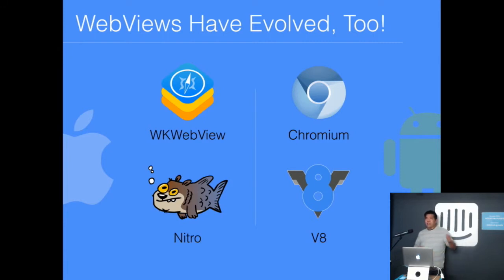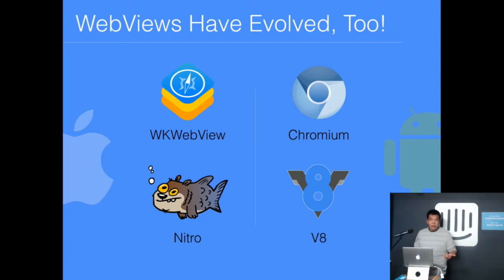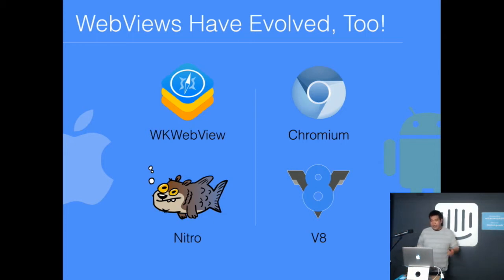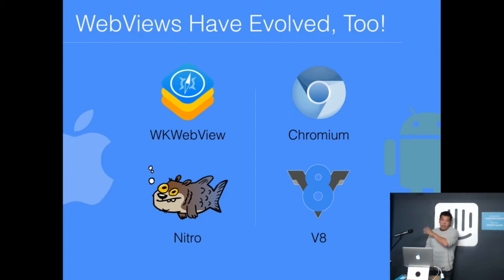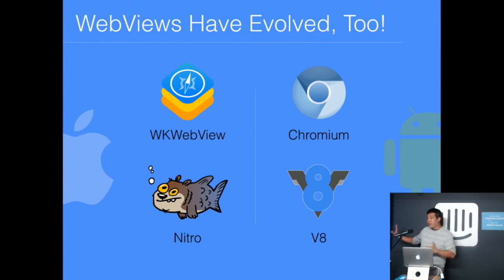Web views have also evolved. As of Android 4.4, we have access to the Chromium-based web view on Android. As of iOS 8, we have WKWebView on iOS. The big deal is the JavaScript engines these bring: Chromium brings Google's V8 engine, and WKWebView brings WebKit's Nitro engine — also known internally as Squirrelfish Extreme, which has arguably the greatest logo in the history of software development.